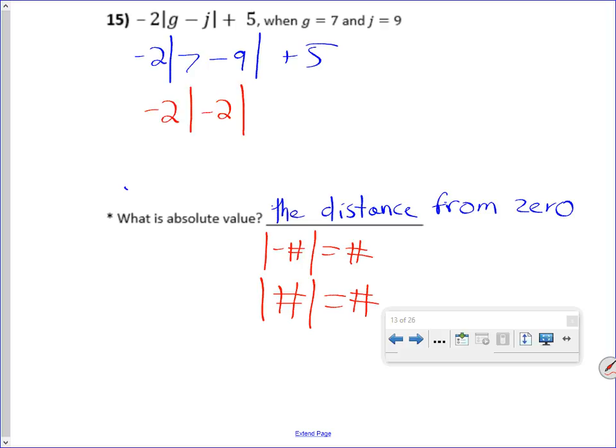Now the common mistake people do is they're trying to apply the absolute value before they simplify what's inside the absolute value. Treat the absolute value as a grouping symbol. And so before we do anything, we need to get it down to a single number. Then we apply the absolute value, and the absolute value of negative 2 is positive 2. This will give me negative 4 plus 5. So my final answer is 1.